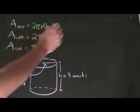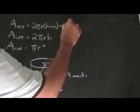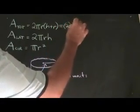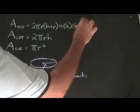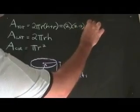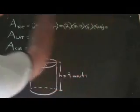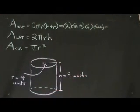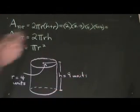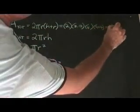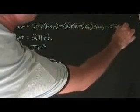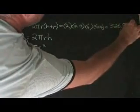The total area formula is 2 times 3.14 times the radius 4 times the height plus the radius, which is 9 plus 4. This gives us a total of 326.56 units squared.